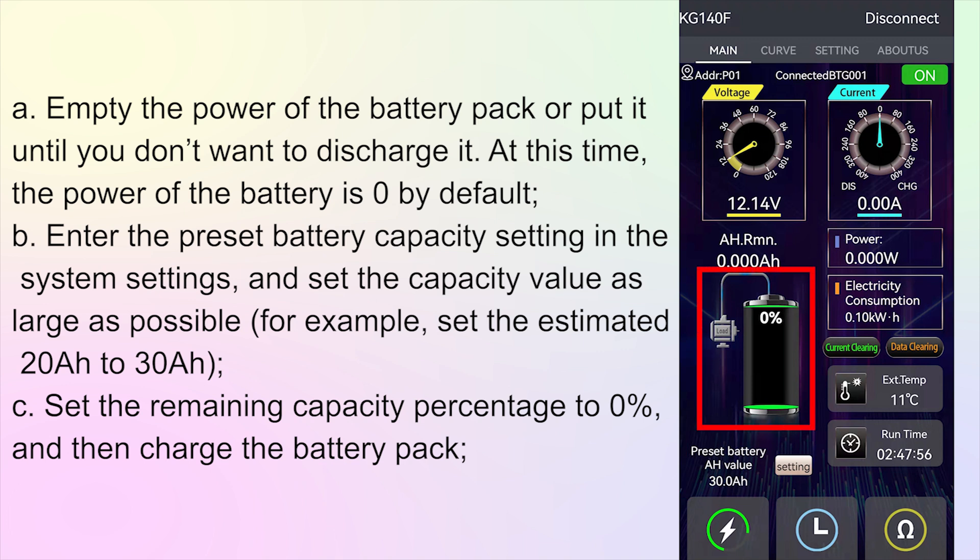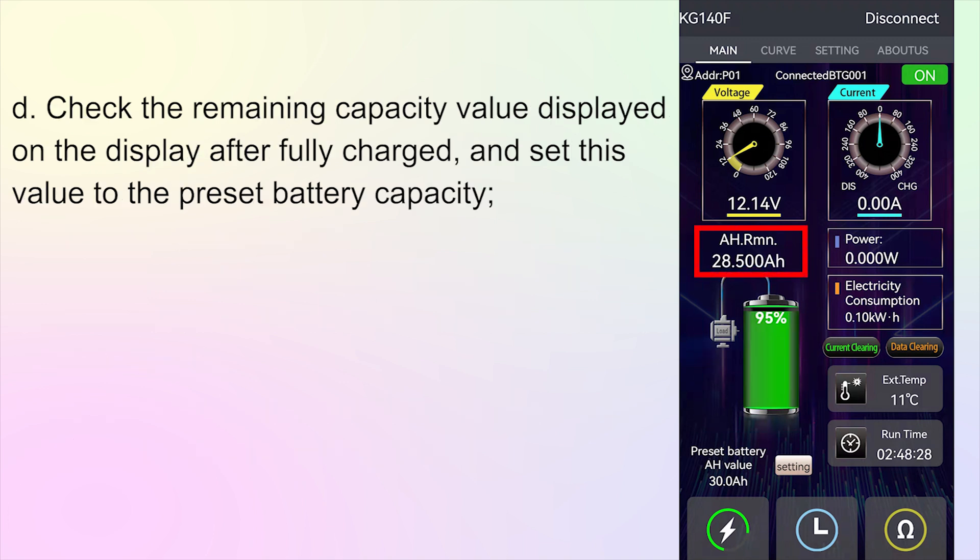C. Set the remaining capacity percentage to 0% and then charge the battery pack. D. Check the remaining capacity value displayed on the display after fully charged and set this value to the preset battery capacity.